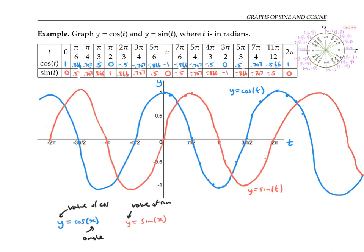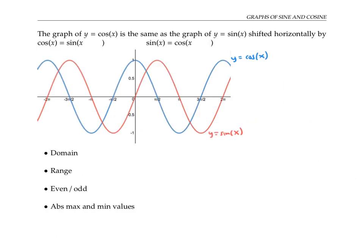Now let's look at some properties of the graphs of sine and cosine. The first thing you might notice is that the graph of cosine and the graph of sine are super similar to each other. In fact, you can think of the graph of cosine as just being the graph of sine shifted to the left by pi over two.